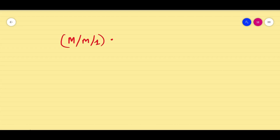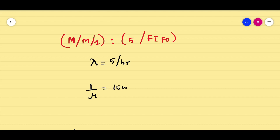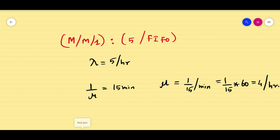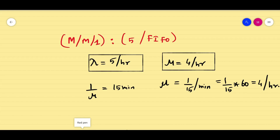This is an M/M/1 finite system capacity model with capacity k equals 5. The arrival rate follows Poisson and service rate follows exponential distribution. λ is given as 5 per hour and 1/μ is given as 15 minutes. Converting, μ equals 1/15 per minute, which gives 4 per hour. So converting everything to hours: λ equals 5 per hour, μ equals 4 per hour, and the finite system capacity k equals 5.